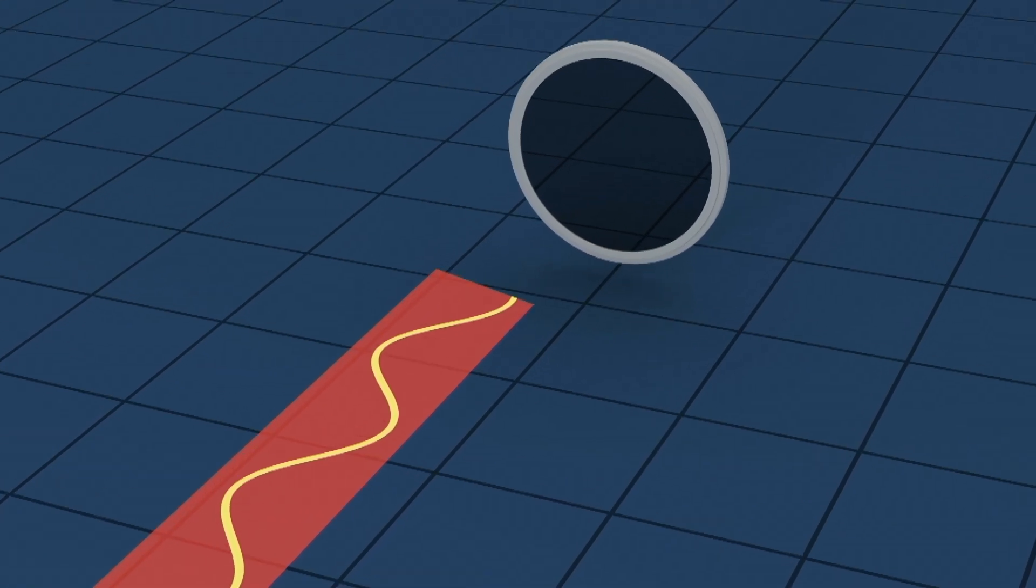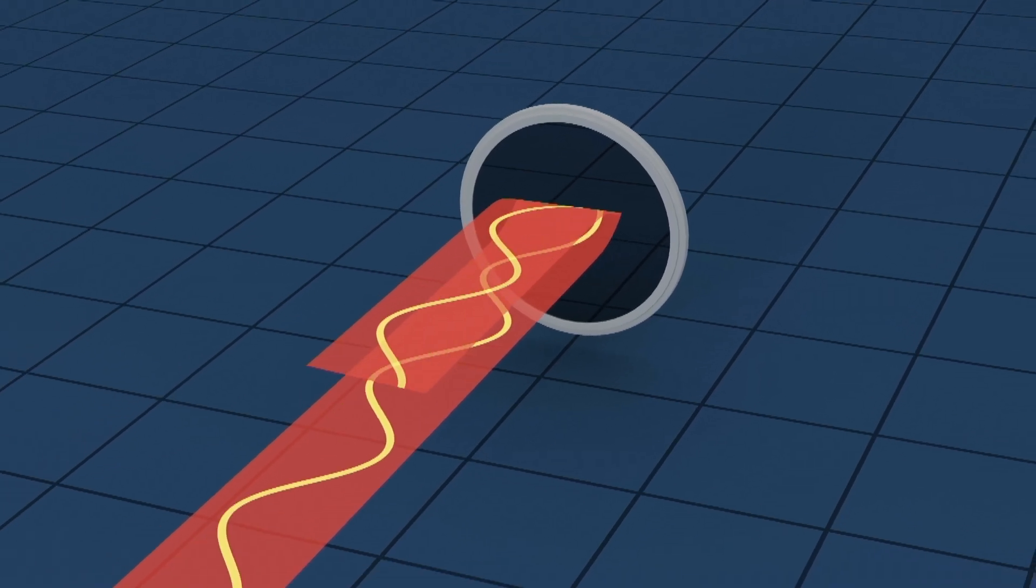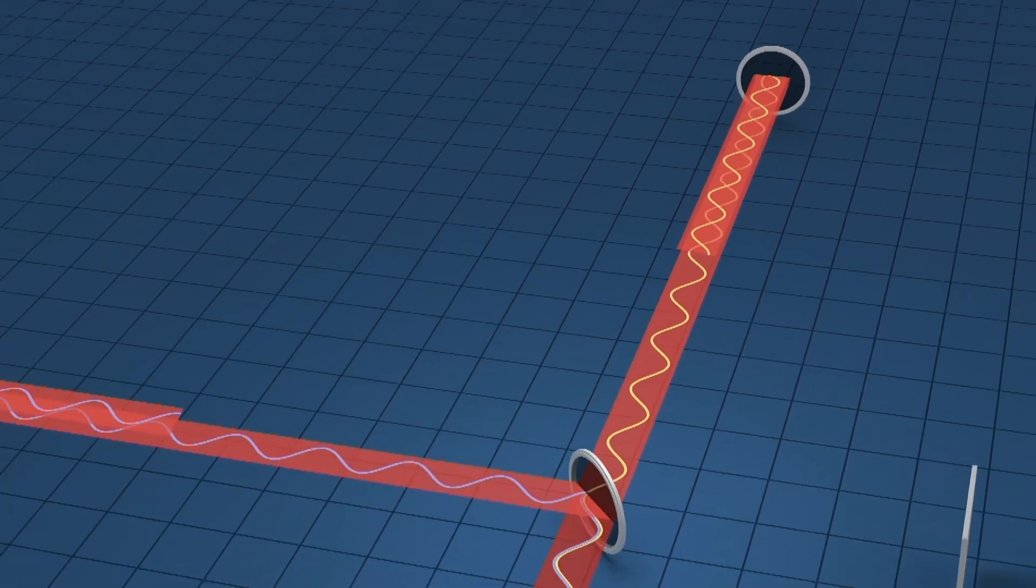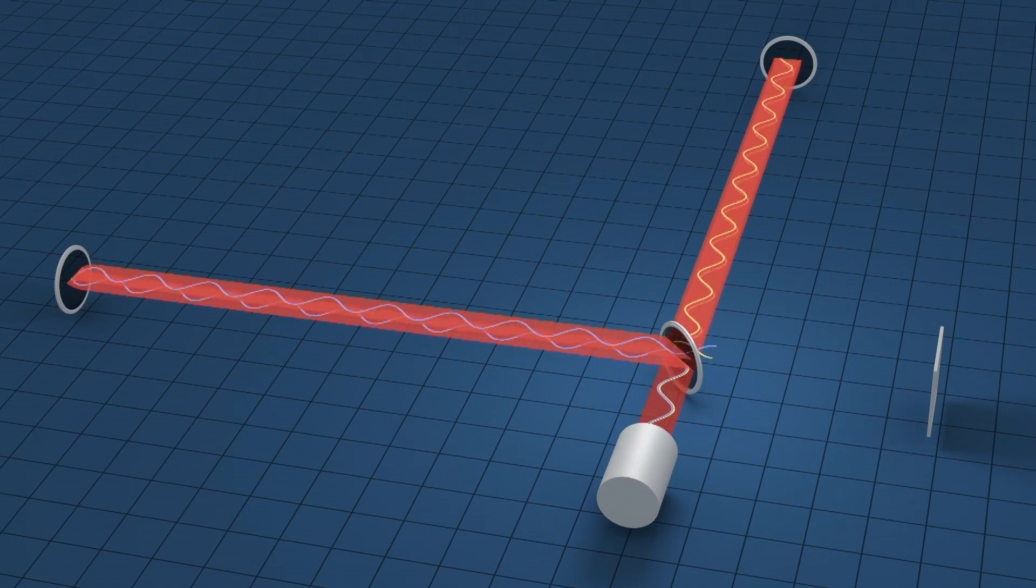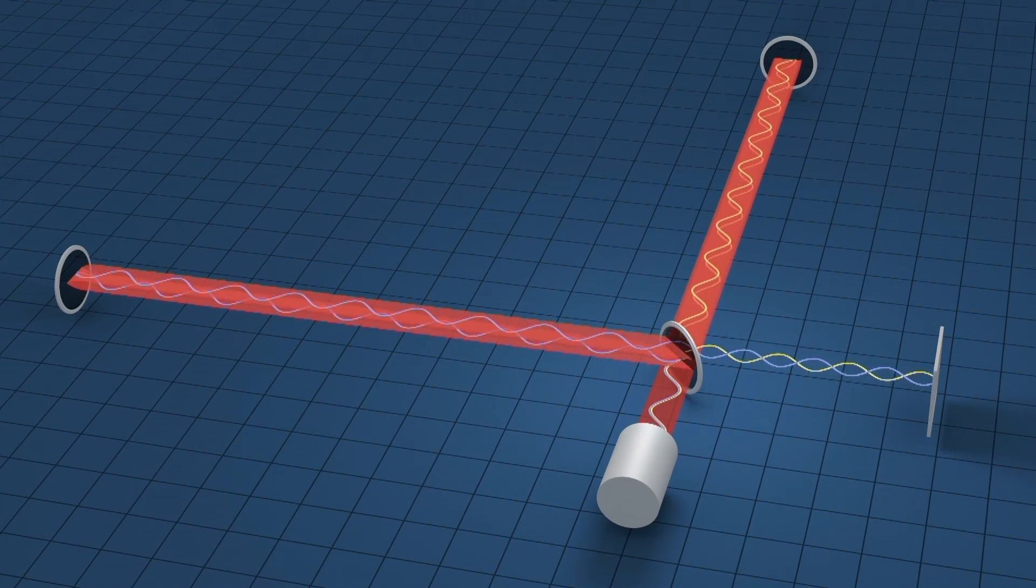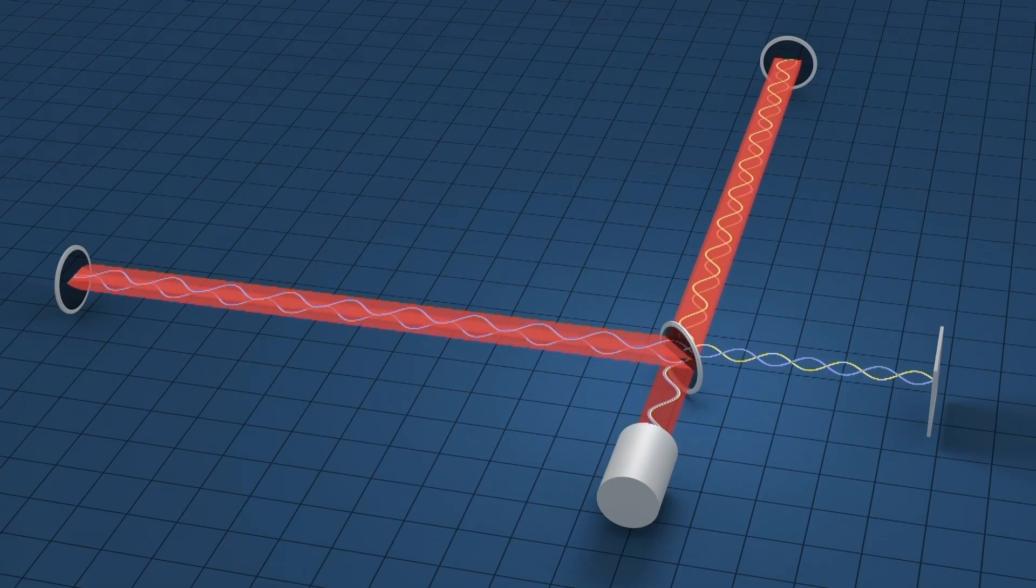The lasers act like a ruler for the arms, precisely measuring the distance between the two mirrors. What's really going on there is literally space is stretching and space is compressing. The distance between the beam splitter and the end mirror of the interferometer is actually changing as this gravitational wave passes.